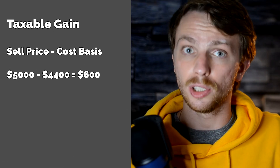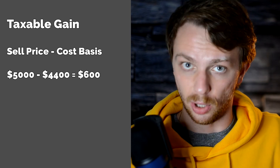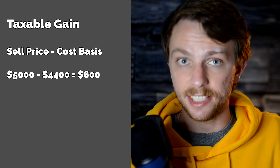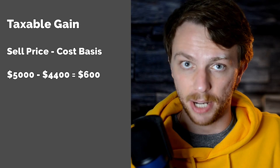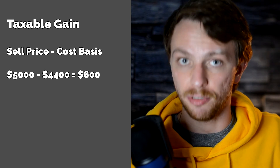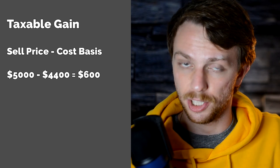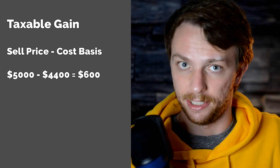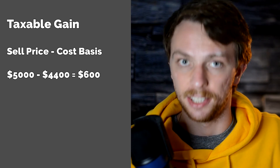Since your total profit was $5,000, your taxable gain is simply the difference between the sell price and your cost basis — which is $5,000 minus $4,400, equaling $600. Using different methods when estimating your cost basis, such as FIFO, LIFO, or average cost basis, might give you different results, which might increase or decrease your taxes.